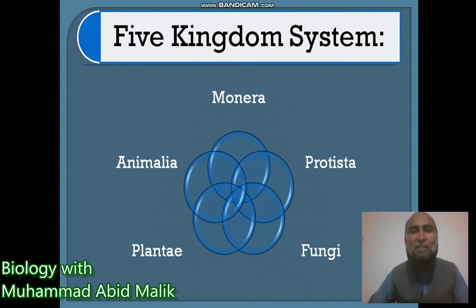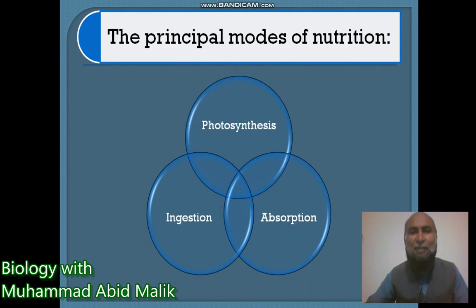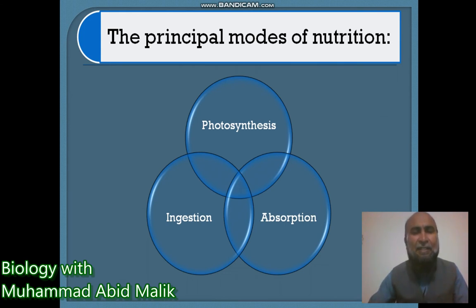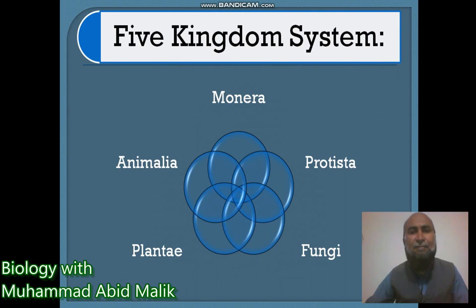Before going towards the next segment, I would like to add one more point. The Five Kingdom System presented by Robert Whittaker included the following kingdoms: Monera, Protista, Fungi, Plantae, and Animalia. Those were the Five Kingdoms proposed by Mr. Robert Whittaker.